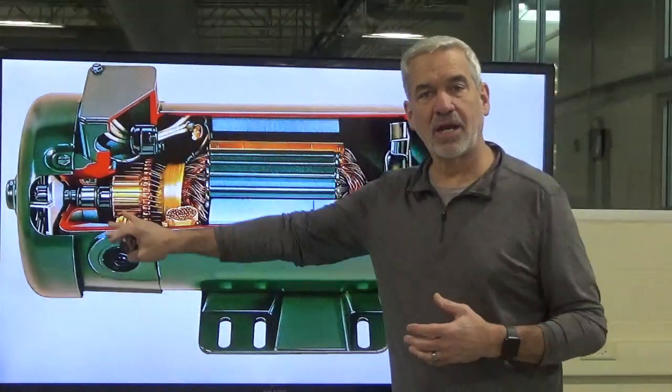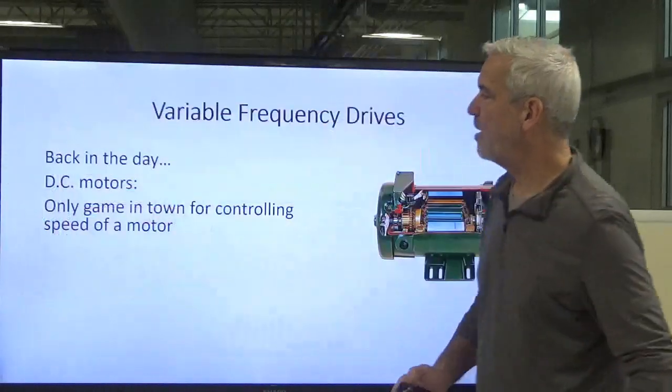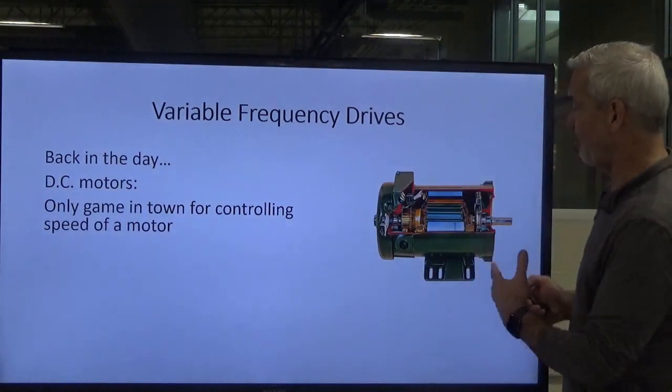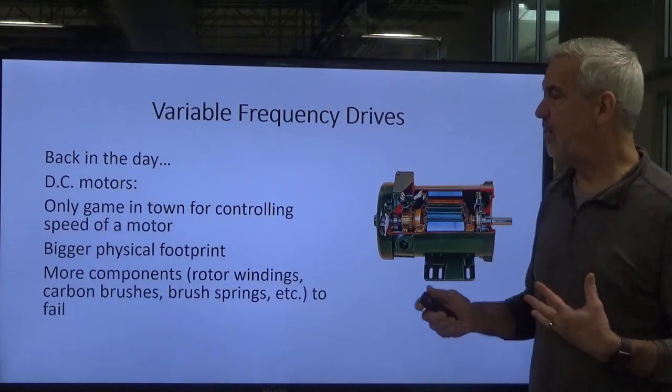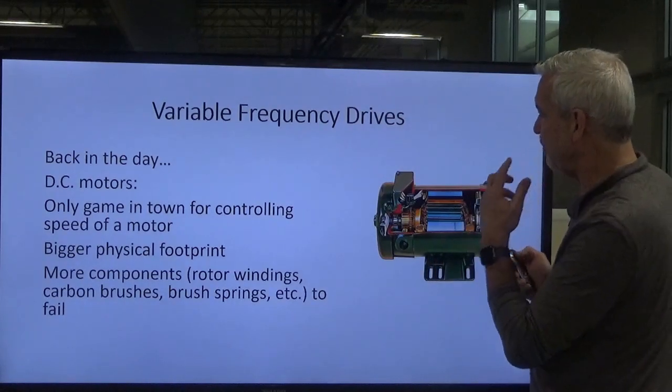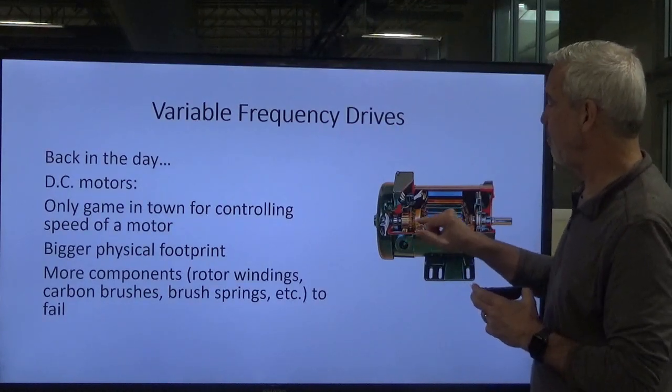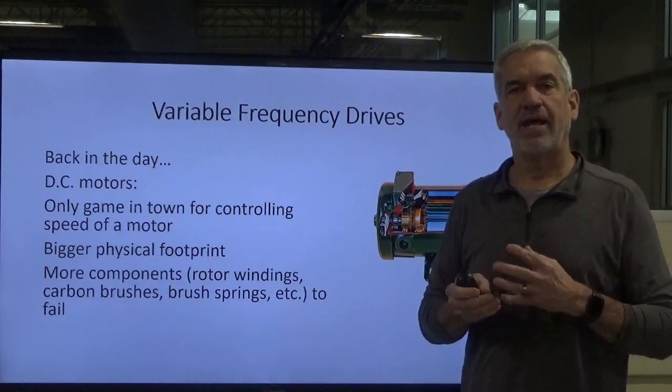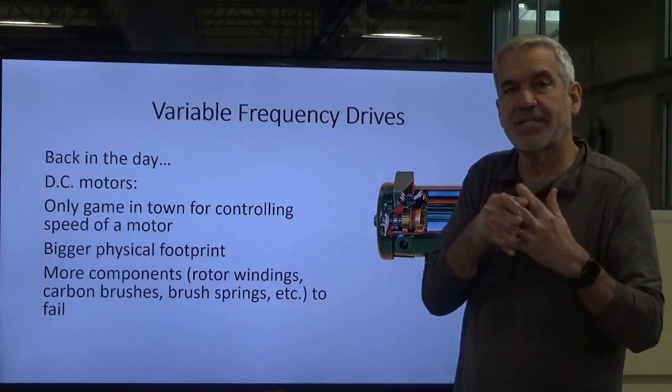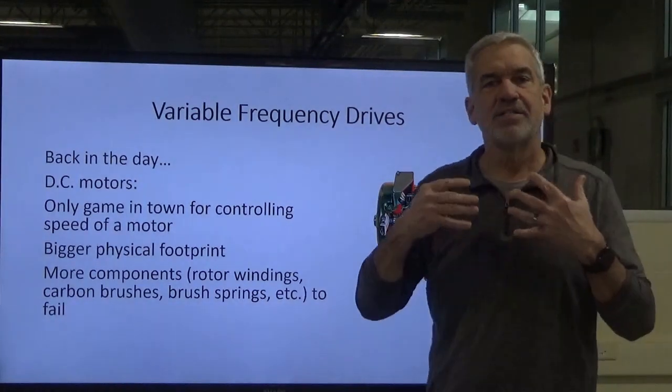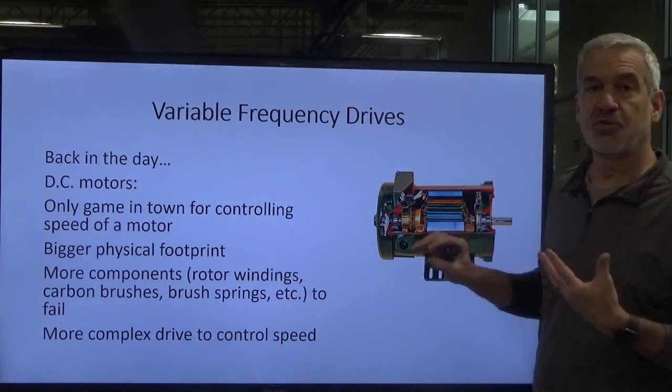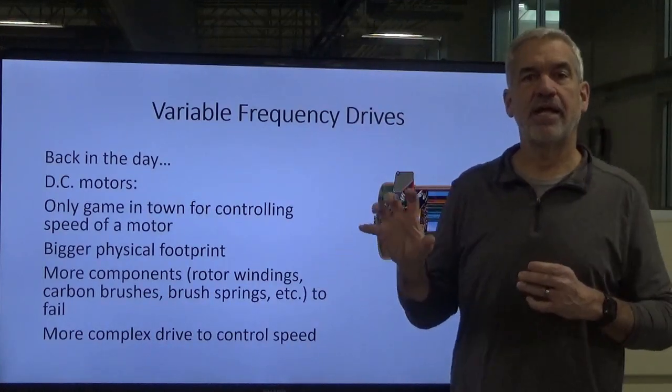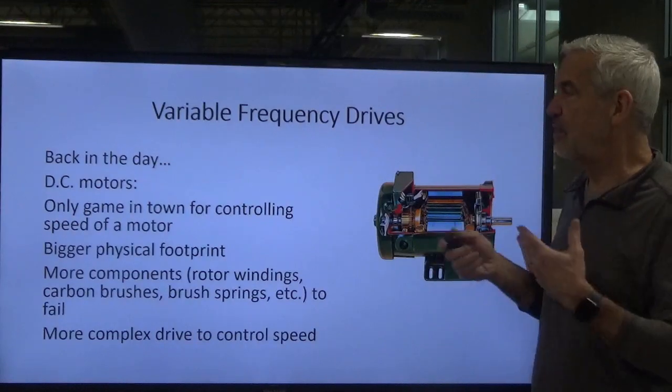This is a picture of a DC motor, a direct current motor. Very large and complex in its makeup. Back in the day, this was the only way you could control the speed of a motor. They were really large physically with a lot more components. This motor has carbon brushes that conduct electricity between the rotor and the stator windings. The carbon brushes would wear, and the commutator would glaze over and have to be resurfaced. There was a lot of arcing, a lot of maintenance involved. But at that time, it was the only way to control motor speed. AC motors were strictly one speed, full speed, and that was it.